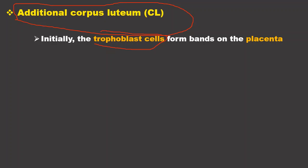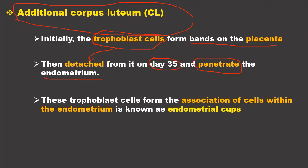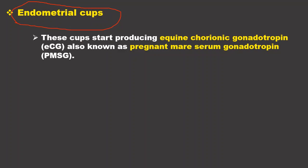The trophoblast cell is a cell from the embryo. These trophoblast cells initially form a band on the placenta, then they detach approximately on day 35 and penetrate into the endometrium of the mare. After penetration, the trophoblast cells form an association of cells within the endometrium called endometrial cups. These endometrial cups then start producing Equine Chorionic Gonadotropin, also known as Pregnant Mare Serum Gonadotropin (PMSG/eCG).